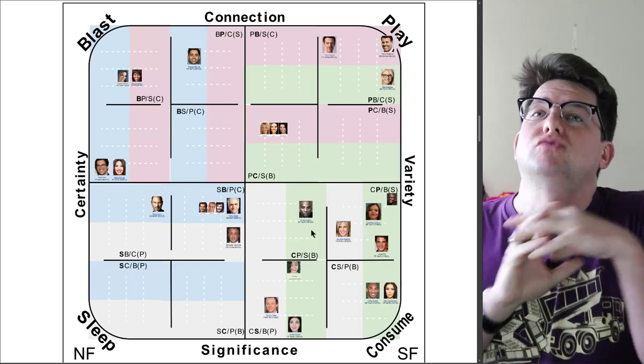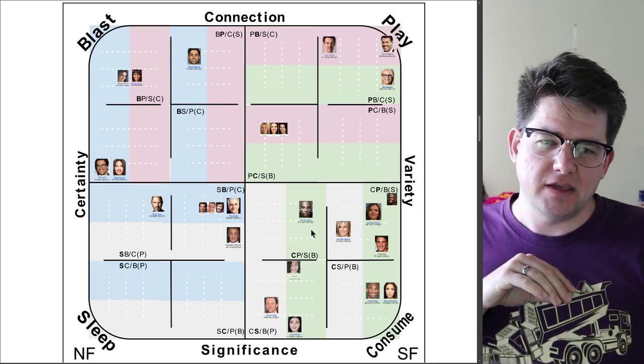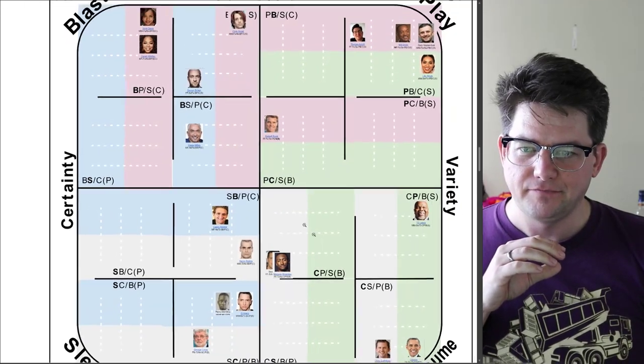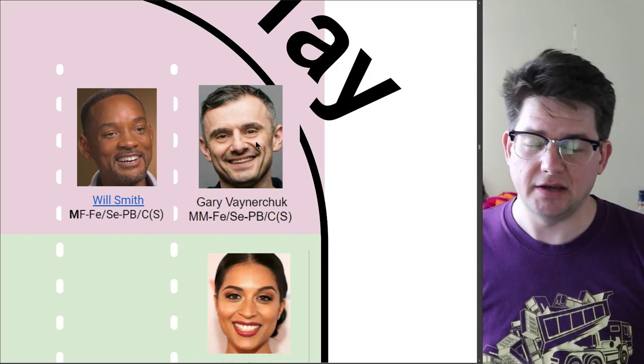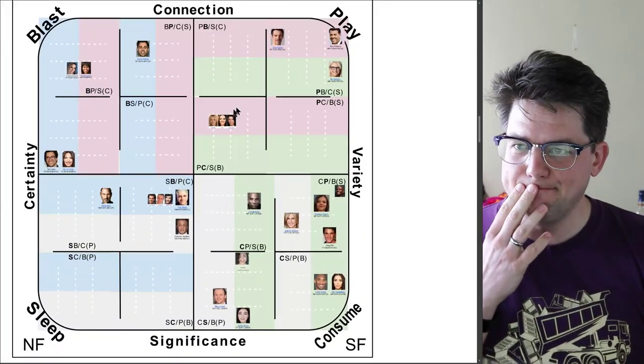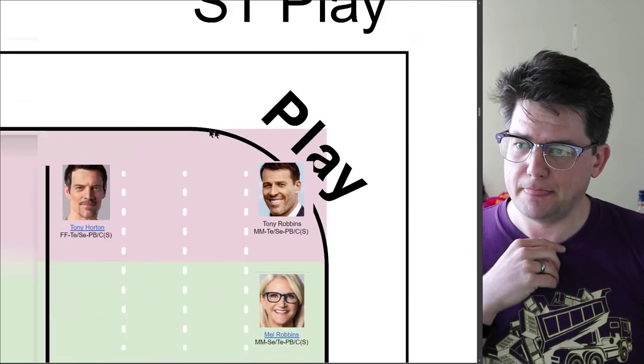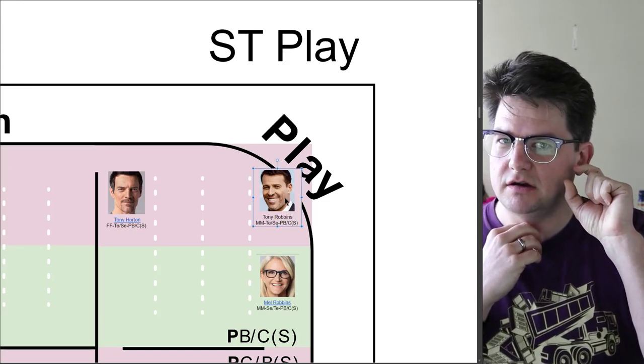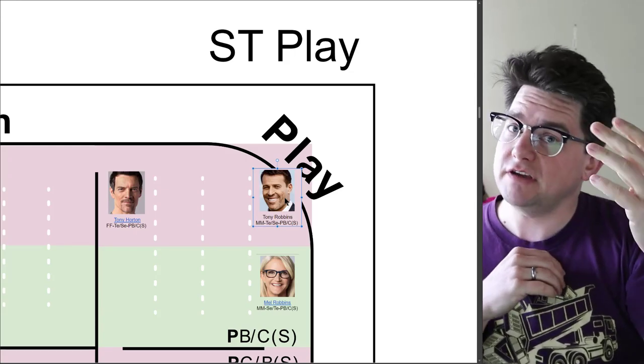They're all the same parts, just in a different order, organized in a different way, firing in a different order, whatever. So each of these people are going to be extremely different from one another. Extremely different. But all of them are going to be the same in lots of ways compared to everybody in this group. So for example, let's get super specific. So there's Gary V. He's the most extroverted of the NF Blasters, the SF Players, the whatever we're calling this quadrant. Versus Tony Robbins, who is the most extroverted of the ST Play folks.